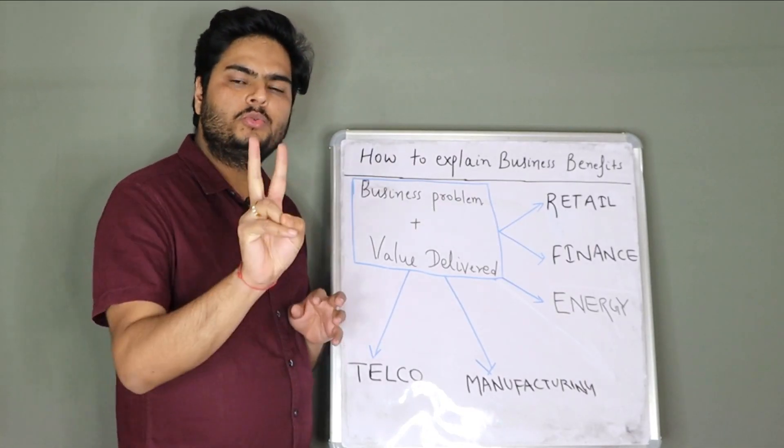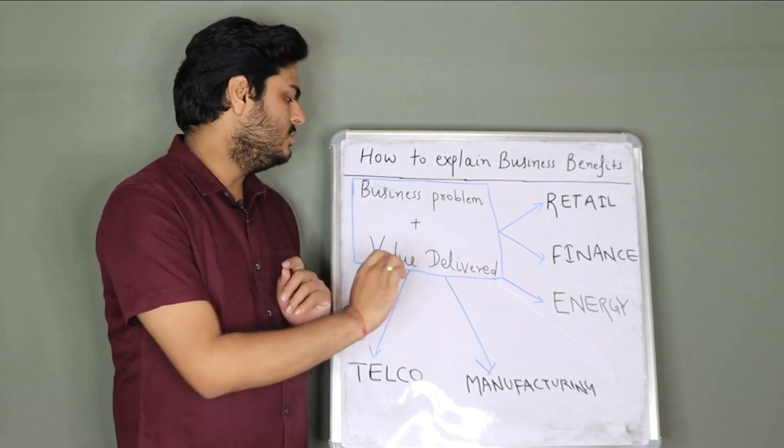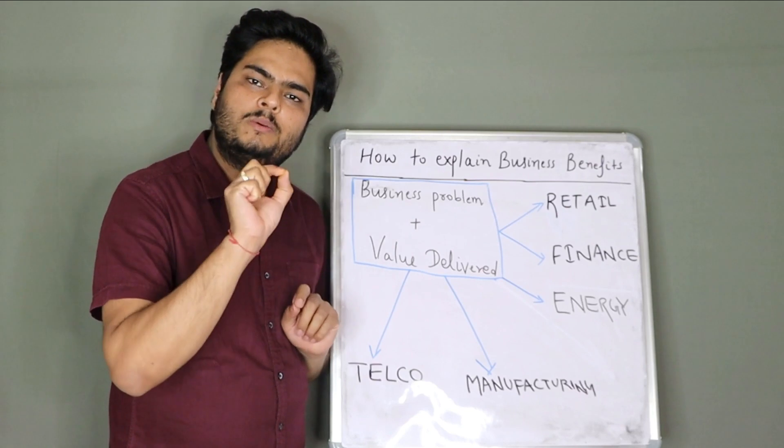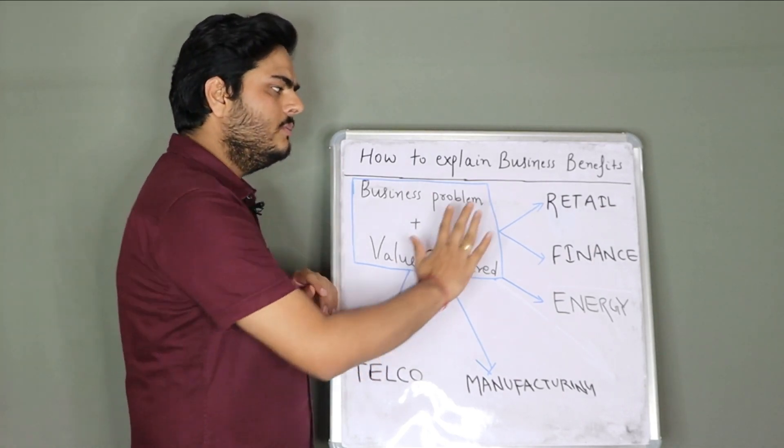I'm going to tell you how you can explain the project value delivered to the business from all these use cases. The objective of this video is to make you aware of how to think about this — what kind of talk will be more effective. At the end of the video, I'll also tell you how you can talk about the value delivered through automation. What you need to focus on is two things: talk the business problem and talk the value delivered.